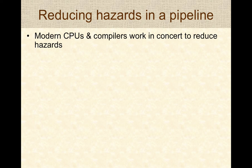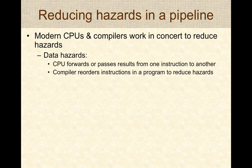Several strategies reduce hazards in a pipeline, combining hardware solutions built into the CPU with compiler techniques. For data hazards, the CPU can use forwarding — passing results from one instruction directly to another, eliminating the need to wait for write-back to complete. The compiler can also reorder instructions to reduce dependencies, thereby reducing stalls or data hazards in the pipeline.